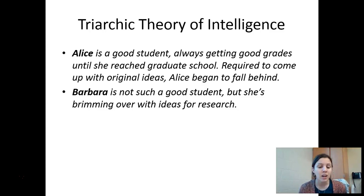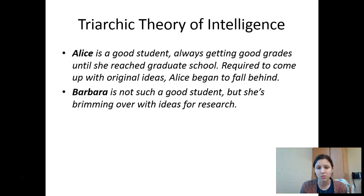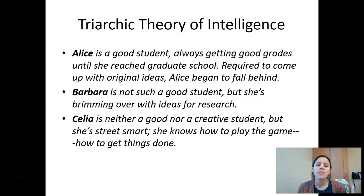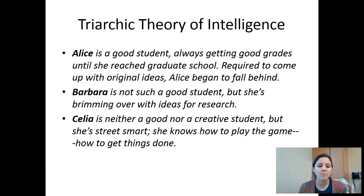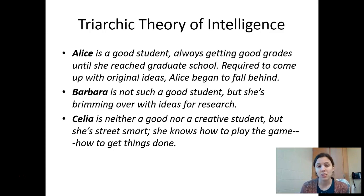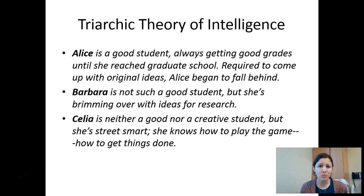Then there's Barbara — not a good student, so low analytical intelligence, but she's brimming over with ideas for research, so she has that creativity piece. And Celia is neither a good student nor creative, but she's street smart. She knows how to play the game and get things done. As our next theorist, Goleman, will say with his emotional intelligence, this street smarts is the most important thing of all.